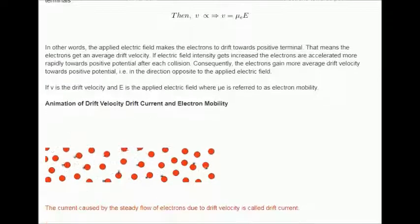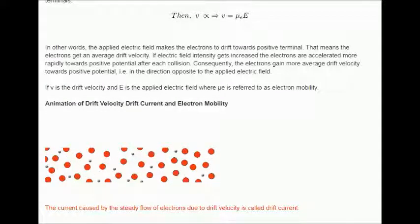The current caused by the steady flow of electrons due to drift velocity is called drift current.